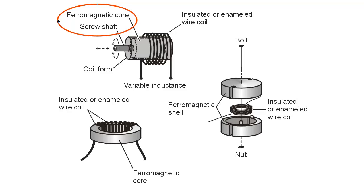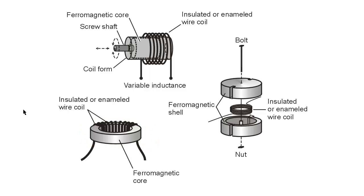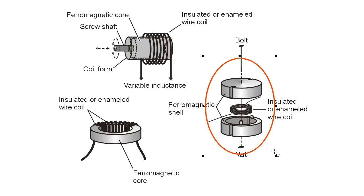This particular example right here is a solenoid configuration of ferromagnetic core. This is a toroid configuration of ferromagnetic core. And this is a configuration known as a pot core.